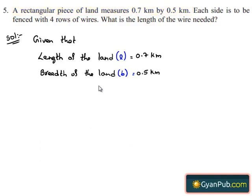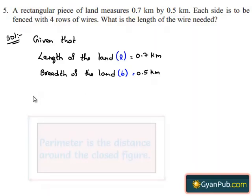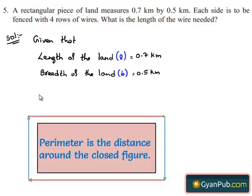The total length of wire needed is nothing but 4 times the perimeter. First, we should know what is meant by perimeter. Perimeter is the distance covered along the boundary forming a closed figure when you go around the figure once.